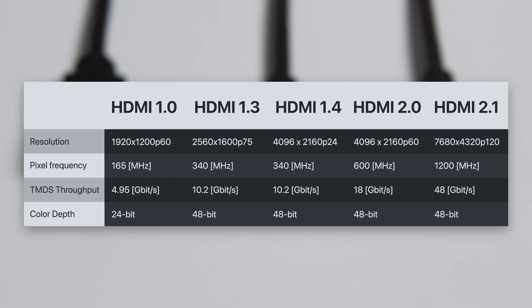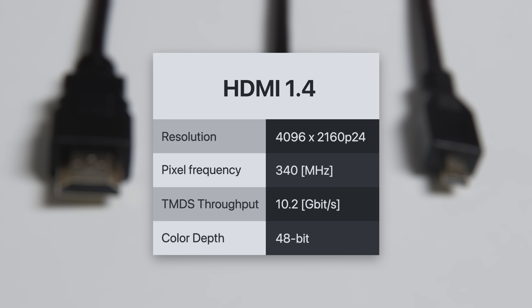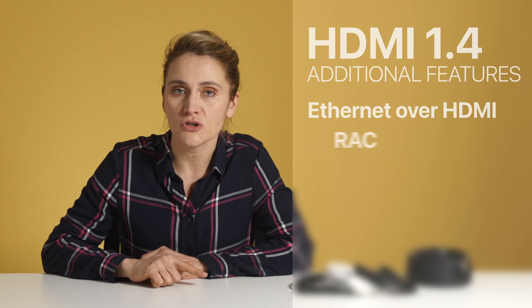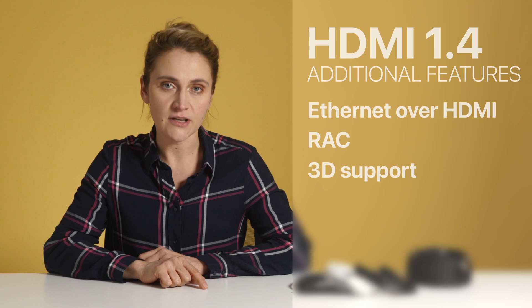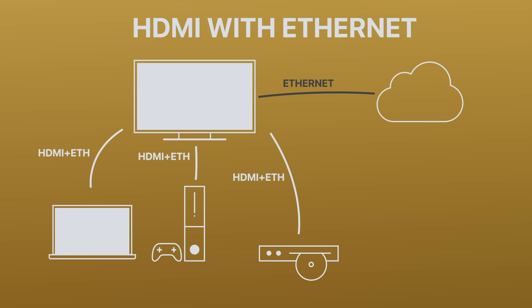HDMI 1.4 and its subsequent updates enabled another technological leap in data transmission and support for 4K resolution. In addition, it includes Ethernet channel support, audio return channel, and 3D support. With the Ethernet channel support, you can connect your gaming console to the internet through your smart TV using just an HDMI cable — fewer wires.